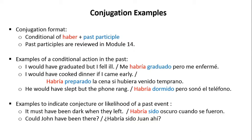Some examples of a conditional action in the past are as follows. 'I would have graduated, but I fell ill' — Me habría graduado, pero me enfermé. 'I would have cooked dinner if I came early' — Habría preparado la cena si hubiera venido temprano. 'He would have slept, but the phone rang' — Habría dormido, pero sonó el teléfono.